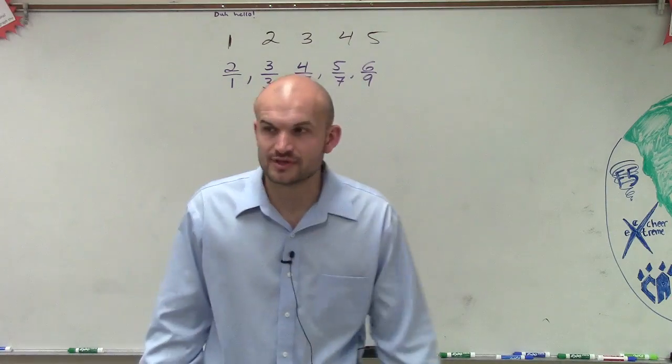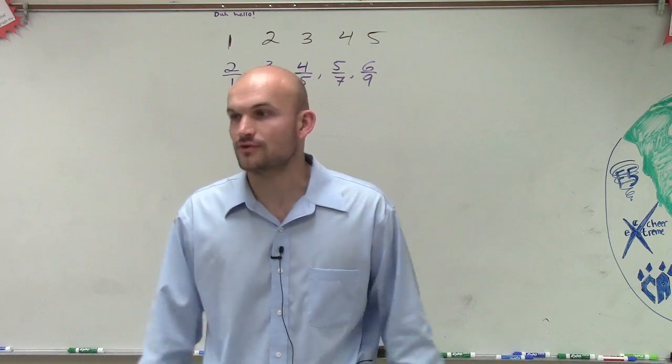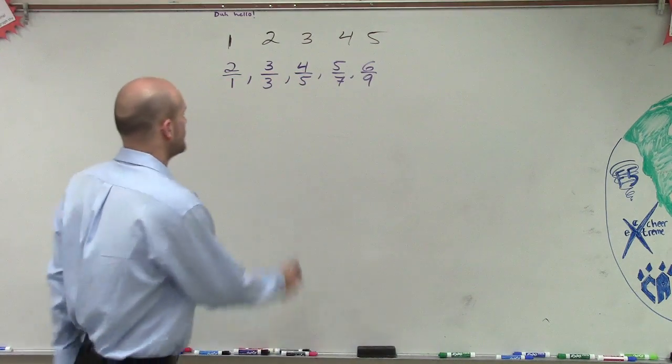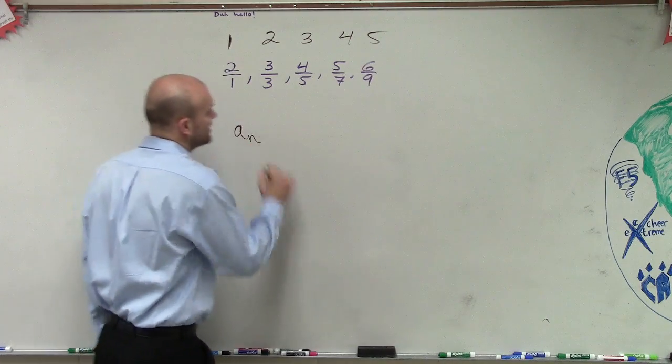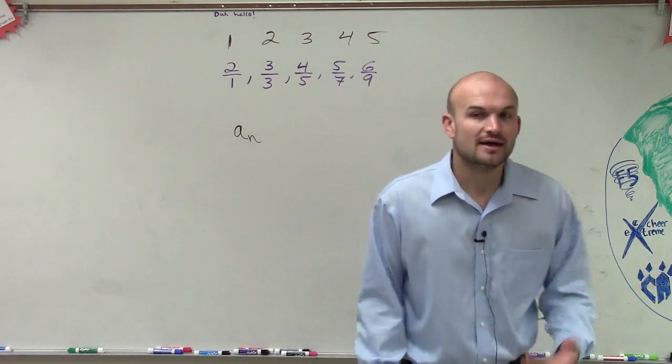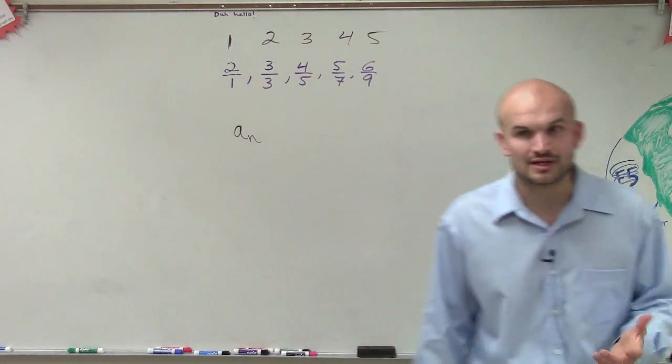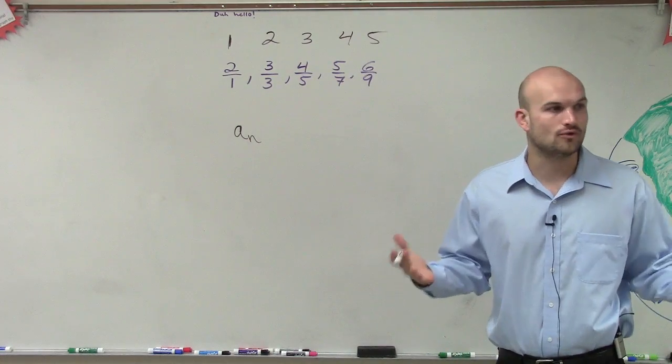So what we need to do is simply be able to find what is going to be our rule. We want to be able to figure out what is a sub n. Now we notice we have a fraction. And the first thing to do, whenever we have a fraction,